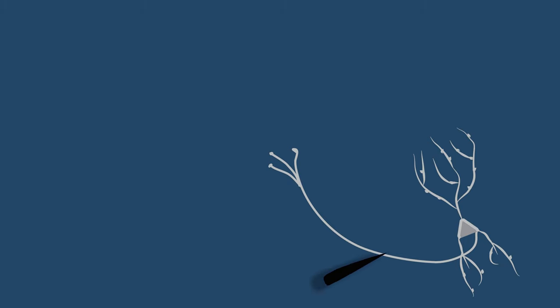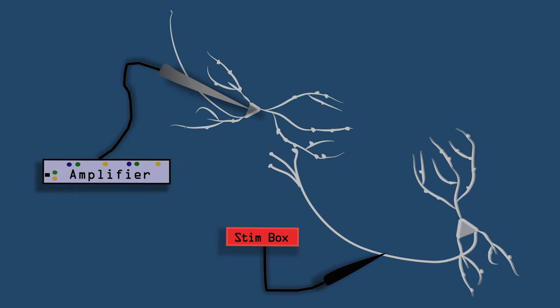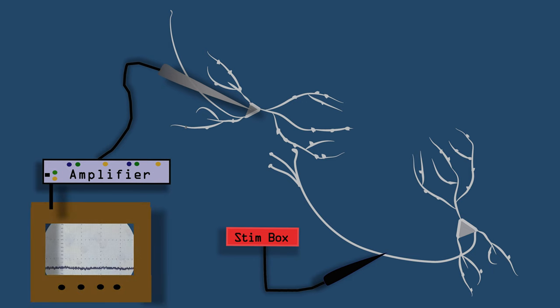Now let's start our experiment. We have placed the stimulation electrode on axons and connected it to the stimulation box. The patch pipette is connected to an amplifier, and we can now monitor the activity of the cell.